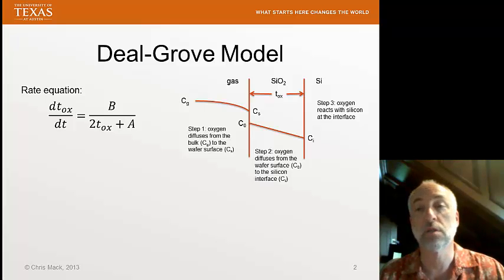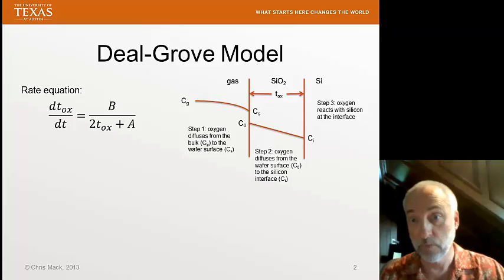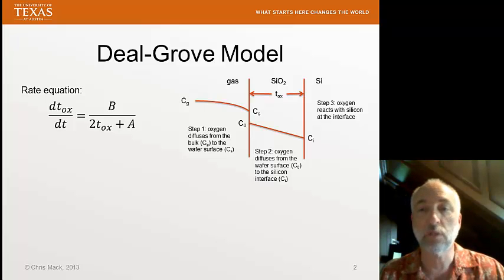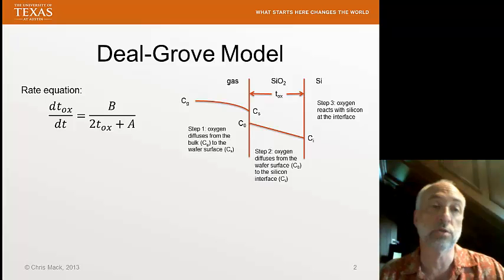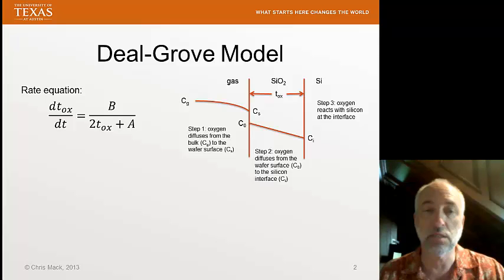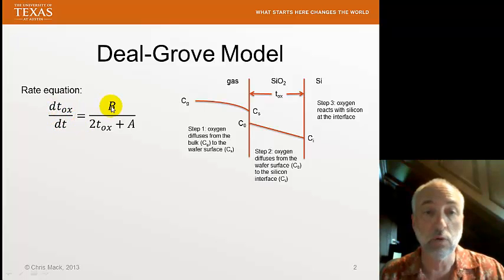Finally, once the oxidant reaches the surface of the interface between the silicon dioxide and the silicon, it reacts with the silicon at that interface, forming silicon dioxide. Using all three of these steps, we were able to derive a rate equation which, in simplified form using lumped constants A and B, shows that the rate of oxide growth per unit time equals B divided by two times the oxide thickness plus A.